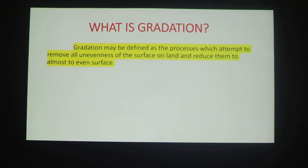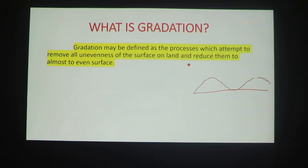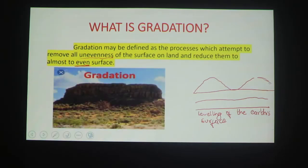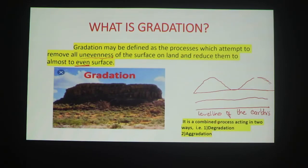Gradation may be defined as the processes which attempt to remove all unevenness of the surface on land and reduce them to an almost even surface. This means leveling of the earth's surface — taking an uneven landform and making it an even surface. It is a combined process acting in two ways: degradation and aggradation.